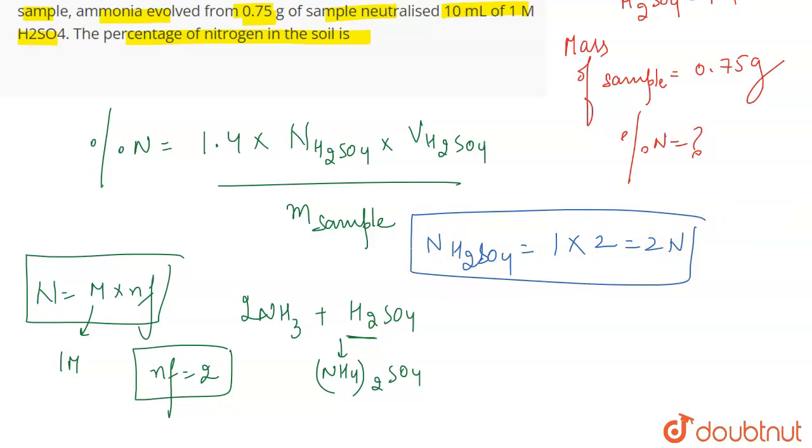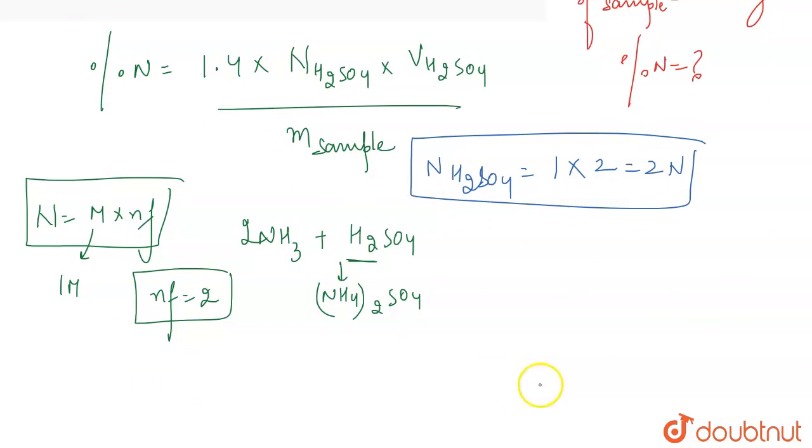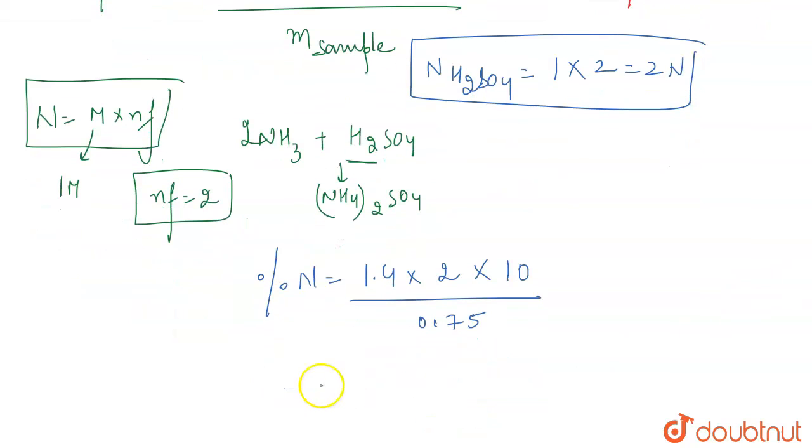Now we have all the values, so we can simply put it here in the formula. So this will be percentage nitrogen equals 1.4 times normality is 2 times the volume is 10 ml divided by the mass of the sample, which is 0.75 grams. From here, we will get the percentage of nitrogen.